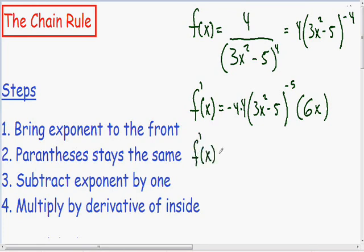So now we just need to simplify this as much as possible. The first thing we can do is multiply the negative 4 times the positive 4, and that gives us a negative 16. The inside of the parenthesis cannot be simplified, so that stays the same. And we can't forget about the 6x.